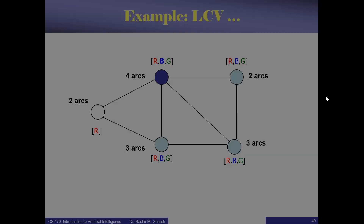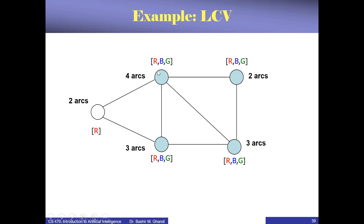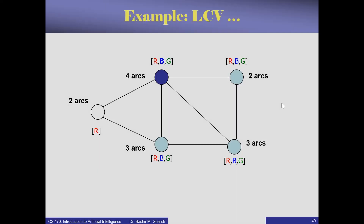The LCV says choose a color that will not constrain the neighboring nodes. For example, one neighbor can only have red. So if you choose red for the current node, you will deprive that neighbor of the only color it can have. Therefore, don't choose red for this node — choose blue instead.